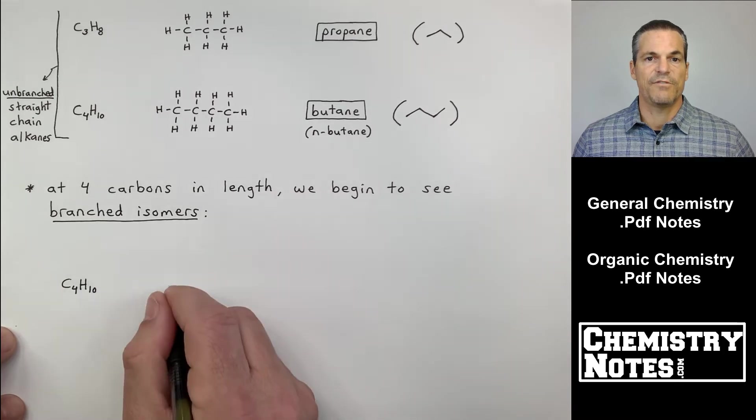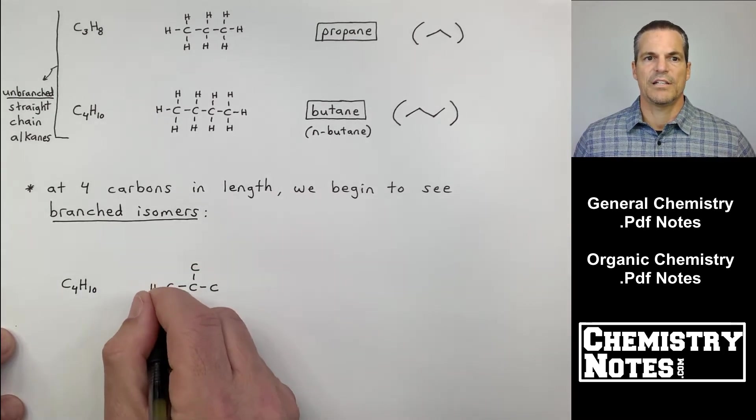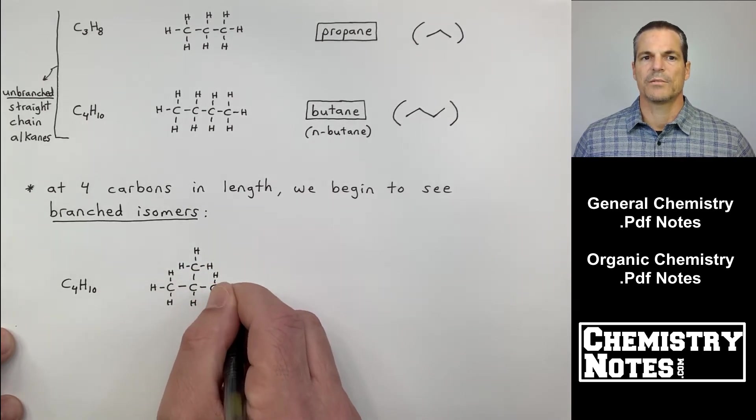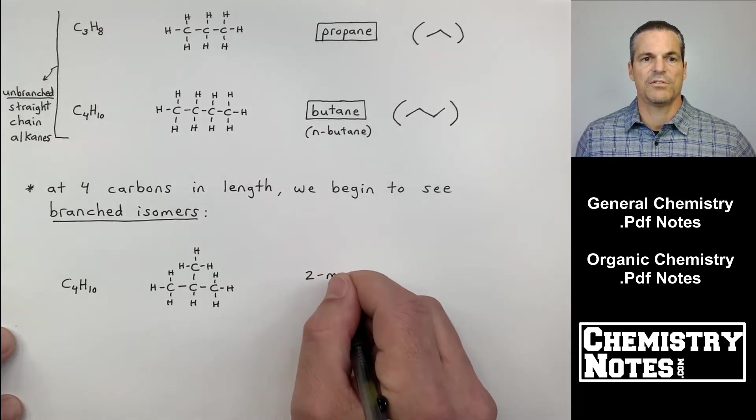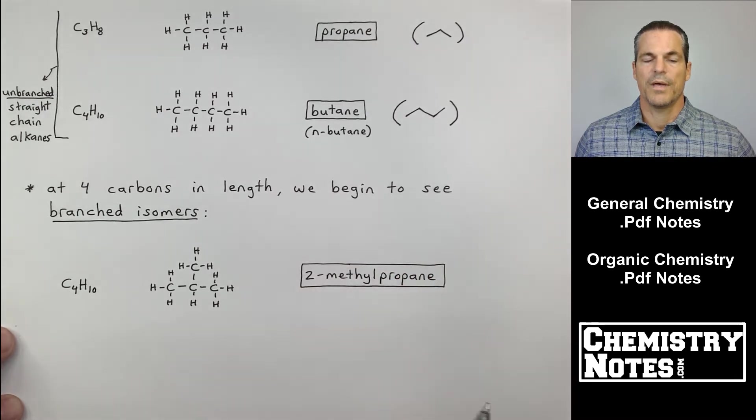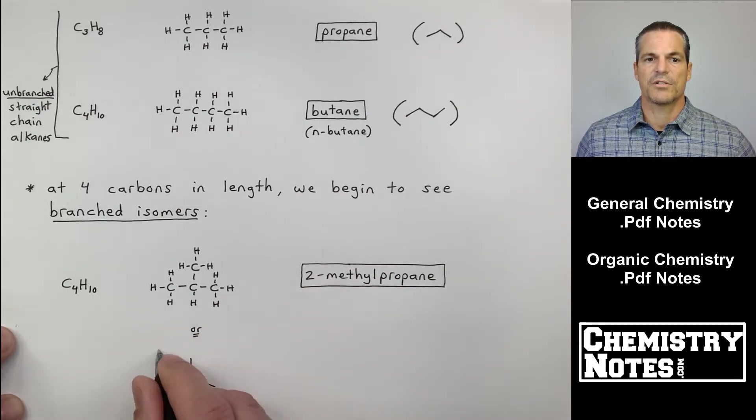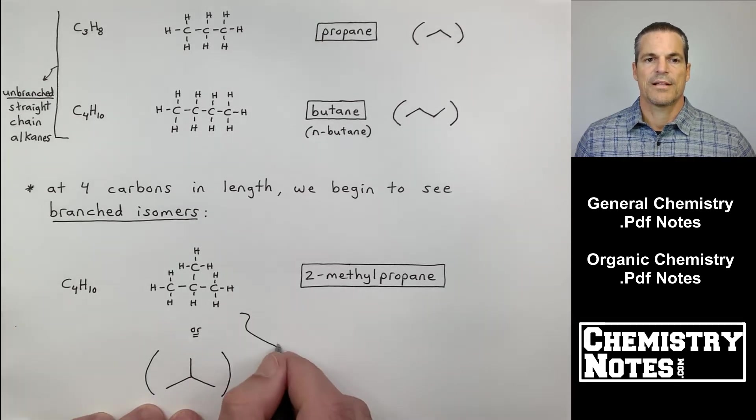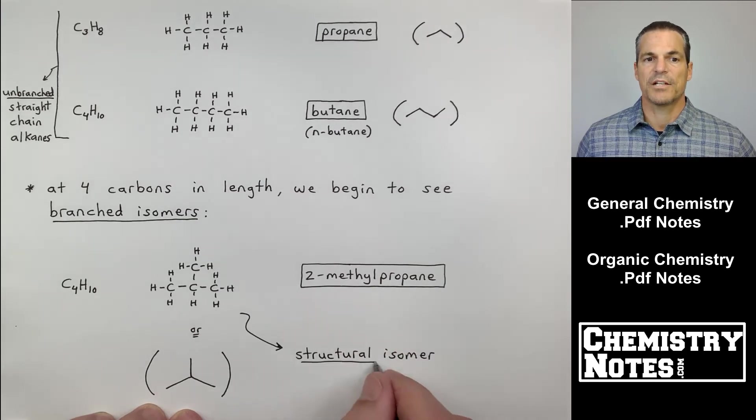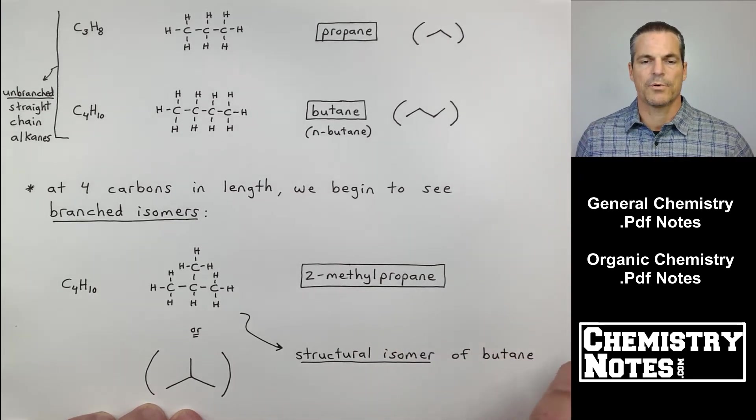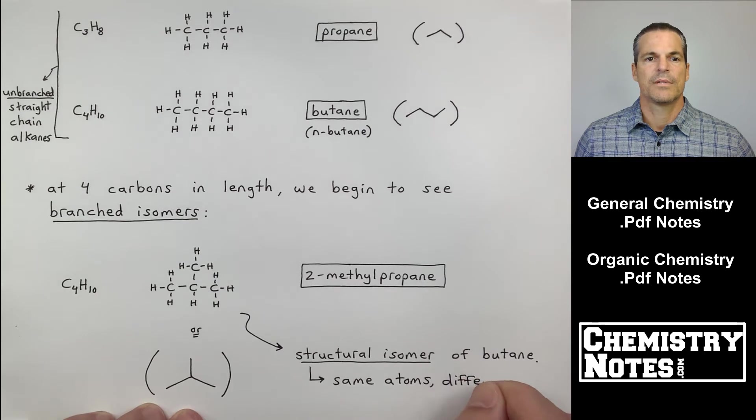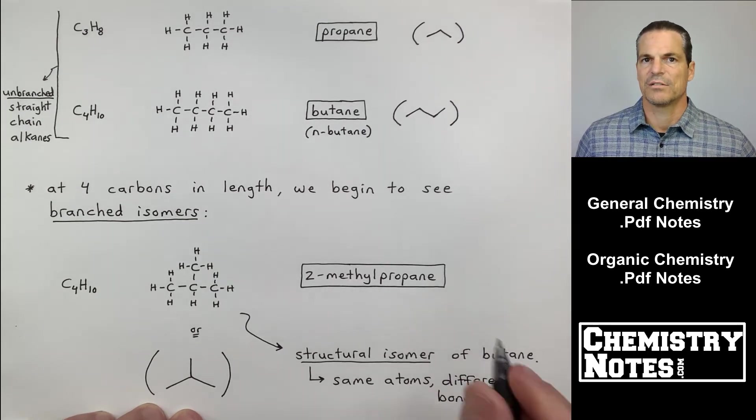Now C4H10 butane - once we get to four carbons in length, we have enough carbons now where we can begin to branch out one of the carbons. So look, down here is another C4H10, except I'm drawing it completely differently. This is an isomer, a constitutional isomer of the C4H10 that you see above. The straight chain is N-butane. This guy is called 2-methylpropane. And the abbreviated structure, it's called a Kekulé structure, by the way, kind of looks like a Mercedes-Benz logo, I guess you could say. And this particular C4H10, we'll learn how to name it 2-methylpropane in the next video. Don't worry about that now. But this is a structural isomer of N-butane. It's got the same number of atoms, but we have different connections, different bonds.